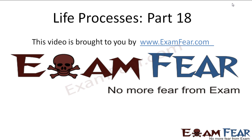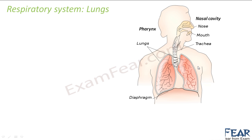This video on life processes part 18 is brought to you by examfear.com. Let us now study about the lungs, which are the functional units and the main places where the actual absorption of oxygen takes place in the respiratory system. Lungs are spongy elastic organs.